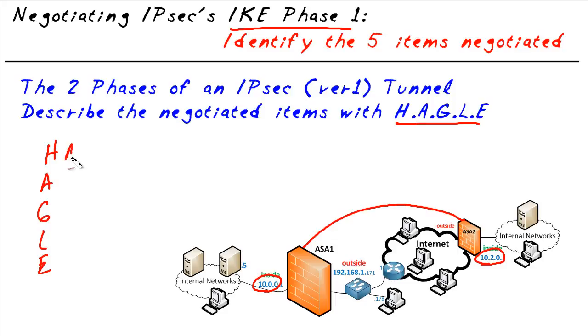The H is for hashing. Hashing algorithms are used to verify data integrity. Popular hashing algorithms would be, for example, MD5 and SHA.